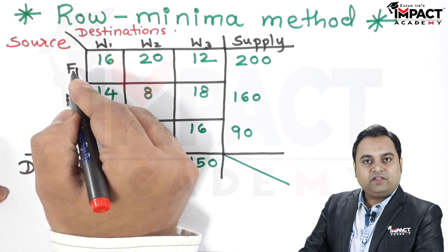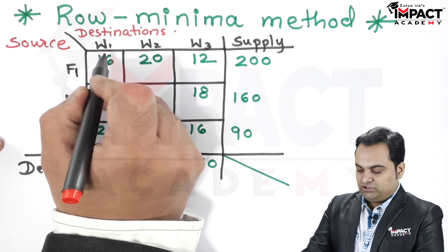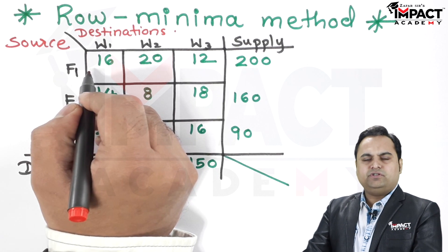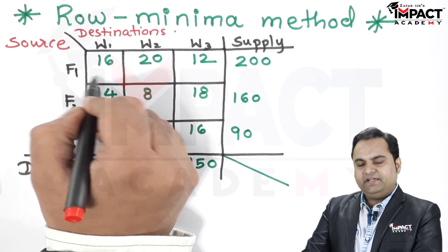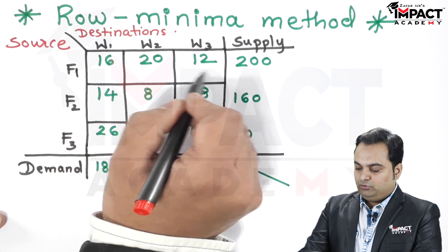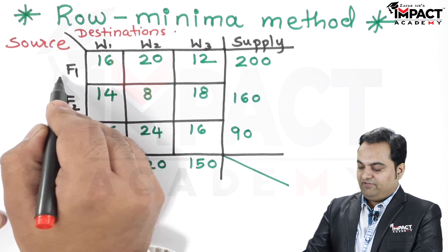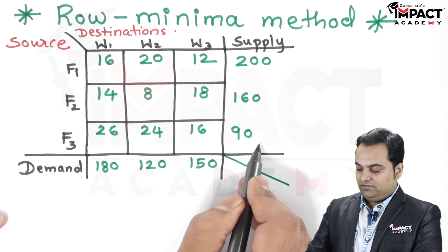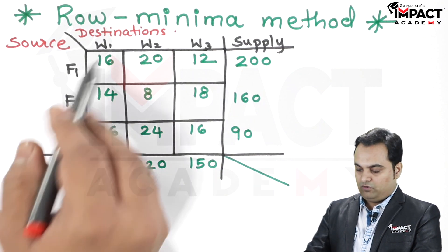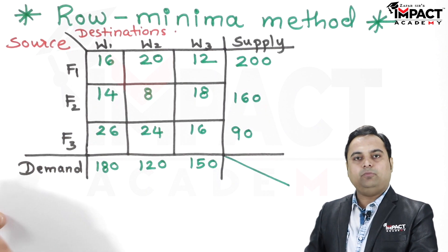When transferring material from factory F1 to warehouse W1, the unit cost is 16. This can represent 16,000 or 1,600 — they indicate the unit cost. Similarly, F1 to W2 is 20, F1 to W3 is 12, and so on. The total supply is 200 for F1, 160 for F2, and 90 for F3. The demand for the warehouses is 180 for W1, 120 for W2, and 150 for W3.